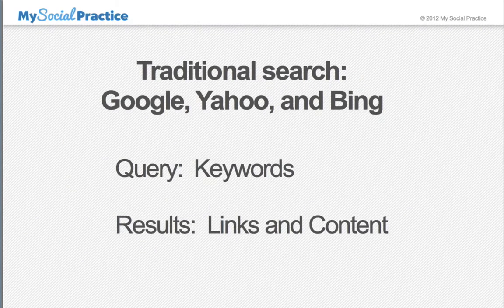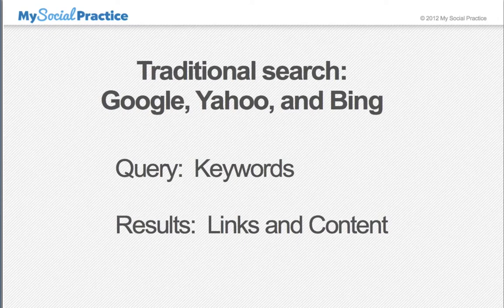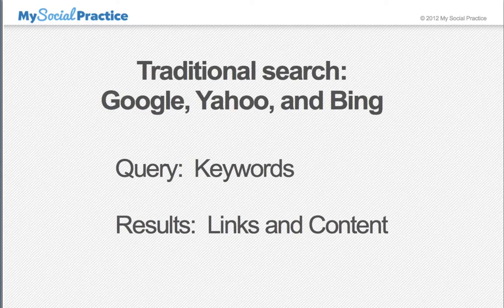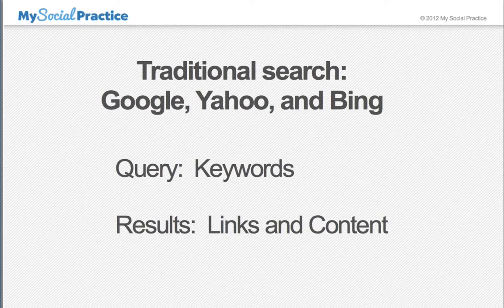Let's talk about traditional search. Traditional search is the type of search you've been using when you use Google, Yahoo, and Bing. Between those three search engines, they comprise about 98% of all search traffic online. Which means that any time a consumer goes online to look for a business or find some information, they're most often going to Google, Yahoo, and Bing. Google controls about 67% of all search traffic online.